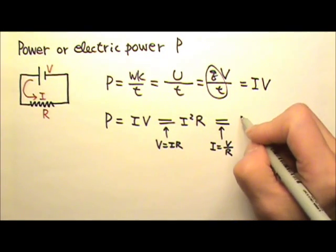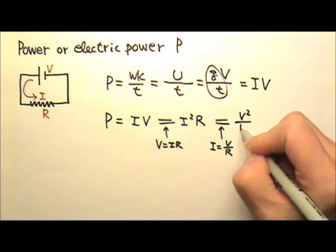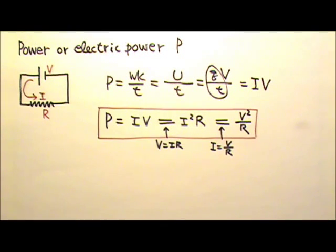If I replace I with V over R, I will get the equation V squared over R. I would recommend that you memorize all three forms of this equation for finding the electric power. You shall find them all very useful.